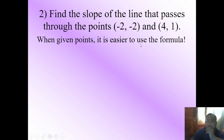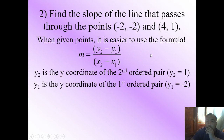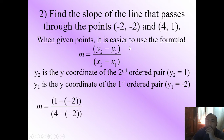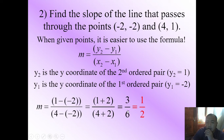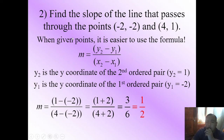Find the slope of the line that passes through the points (-2, -2) and (4, 1). When given points, it is easier to use the formula: m = (y₂ - y₁) / (x₂ - x₁). y₂ is the y-coordinate of the second ordered pair, which is 1. y₁ is the y-coordinate of the first ordered pair, which is -2. So we have (1 - (-2)) / (4 - (-2)), which equals (1 + 2) / (4 + 2), giving us 3 over 6, or one half. By the way, m is the symbol for slope.